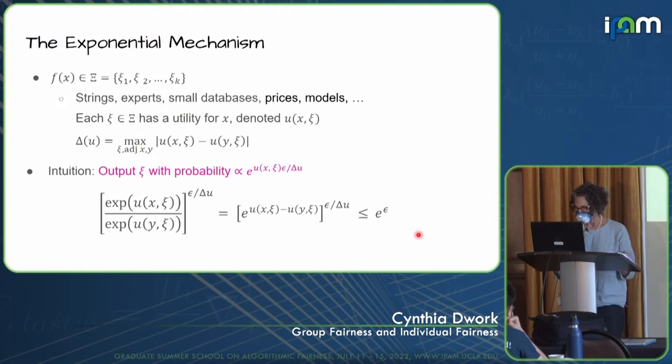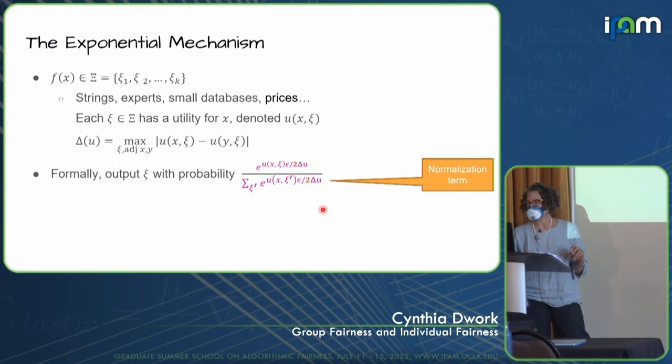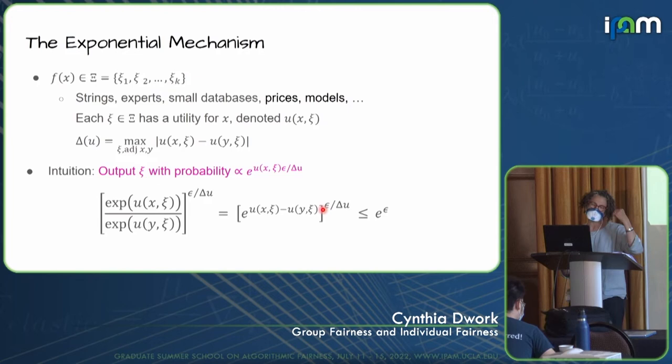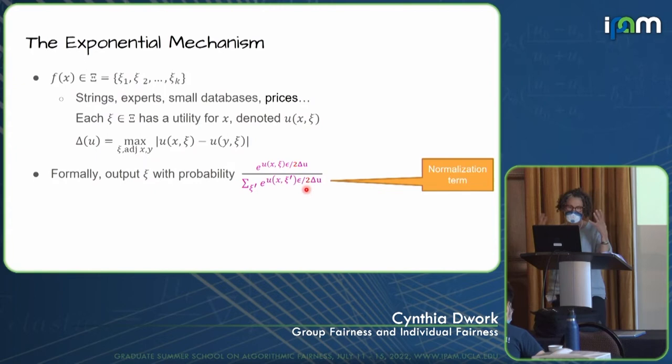There's a slight correction: the proportionality is correct, but there's a normalizing term. When you change between databases x and y, the terms summing to give your normalizing factor can be off slightly, and the upshot is you lose a factor of 2 — so you get epsilon over 2 in both places. That's the exponential mechanism.